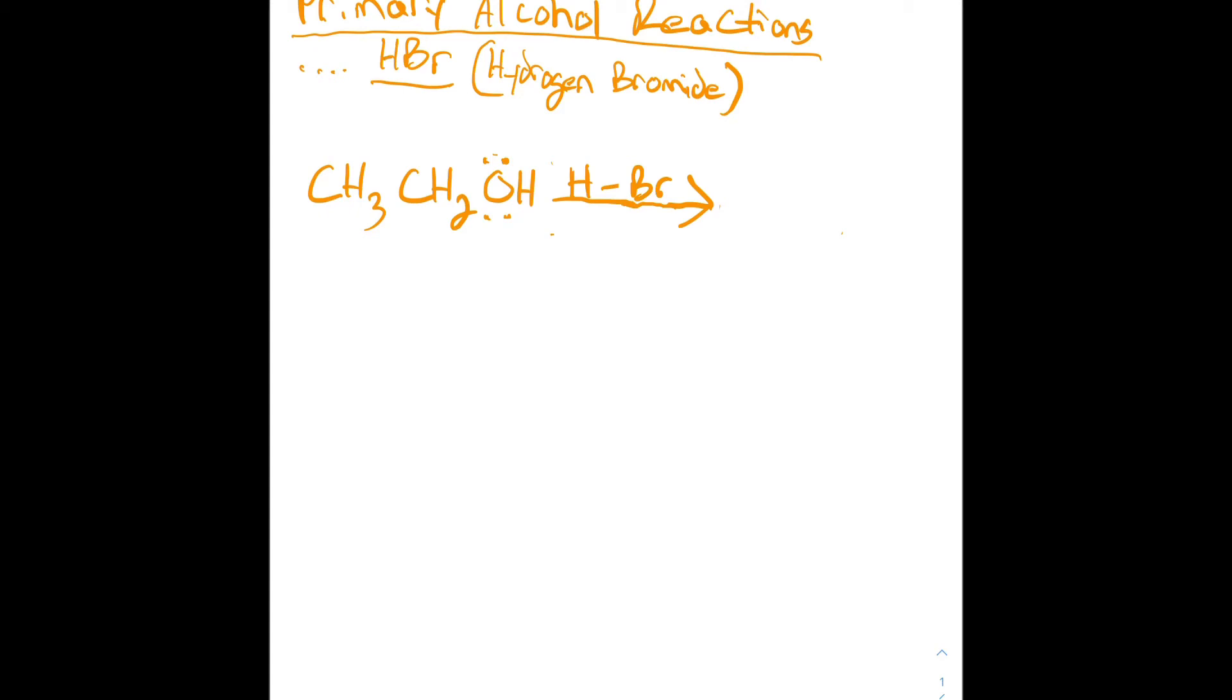In this video we're going to see a primary alcohol undergo a reaction with HBr, and it could be HBr or HCl or HI or any other halogen as well.